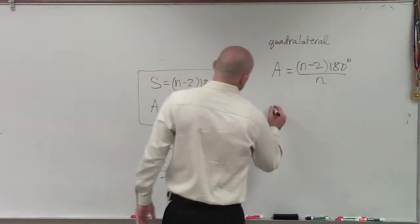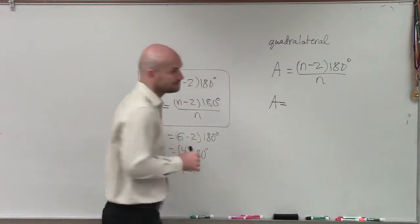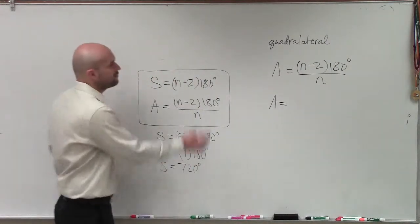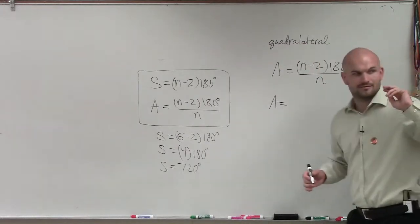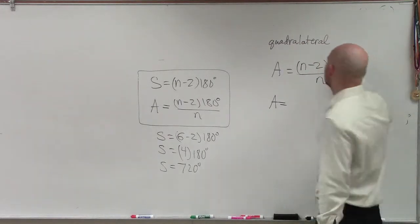So therefore, the measure of each individual angle, well, now it's a quadrilateral. So a quadrilateral has how many sides, Dennis? 4. Very good.